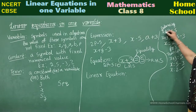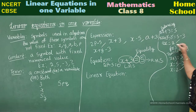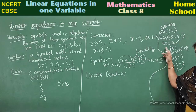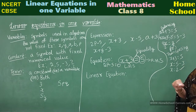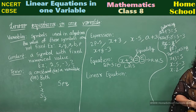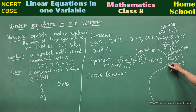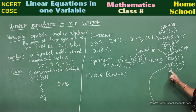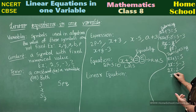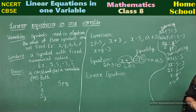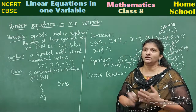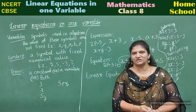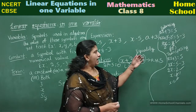If you have a numerical coefficient — for example, 2x equal to 2 — divide both sides by 2, giving x equal to 1. By transposing, 2 is a multiple, so when transposed it becomes a divisor: x equals 2 divided by 2, which is 1. Either method can be used — you can choose whichever is easier.